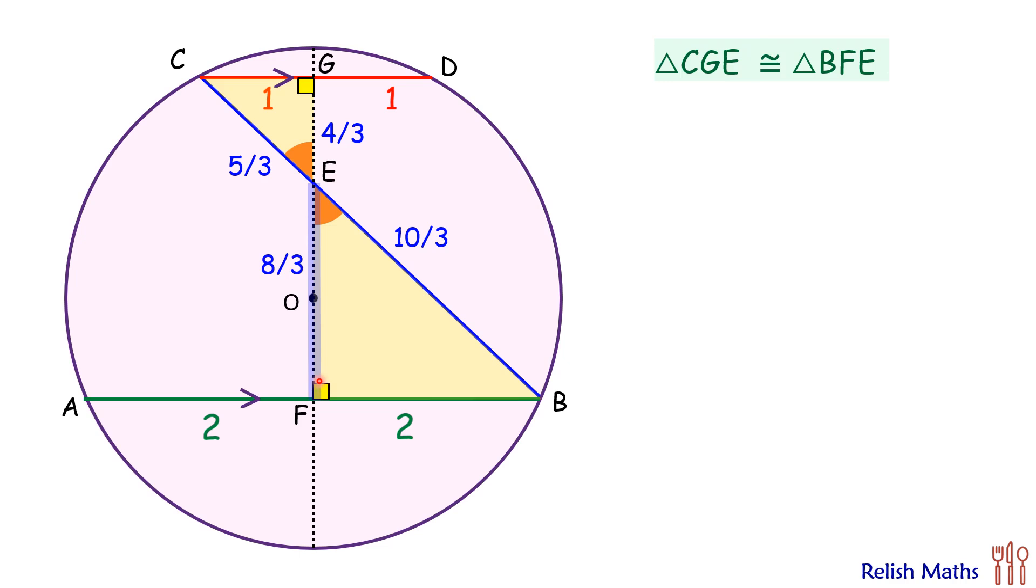Thus the distance between the chords, that is GF, is 4 by 3 plus 8 by 3, or 4 centimeters. So this is the first part of the question. Next part, we'll find the radius of the circle.